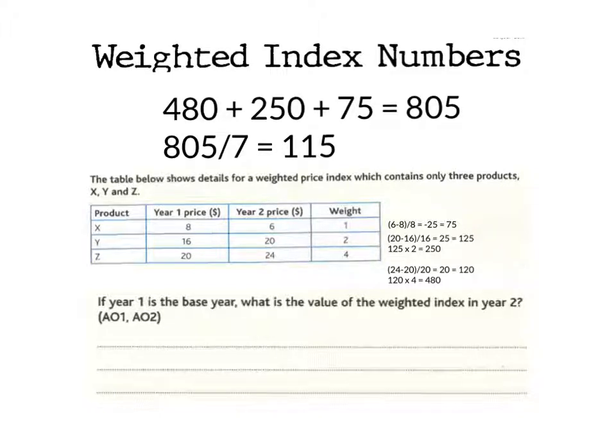What you should have got is 805 in total divided by the 7, which is the total weight because 4 plus 2 plus 1 equals 7, and you should have got a weighted index in year two of 115.